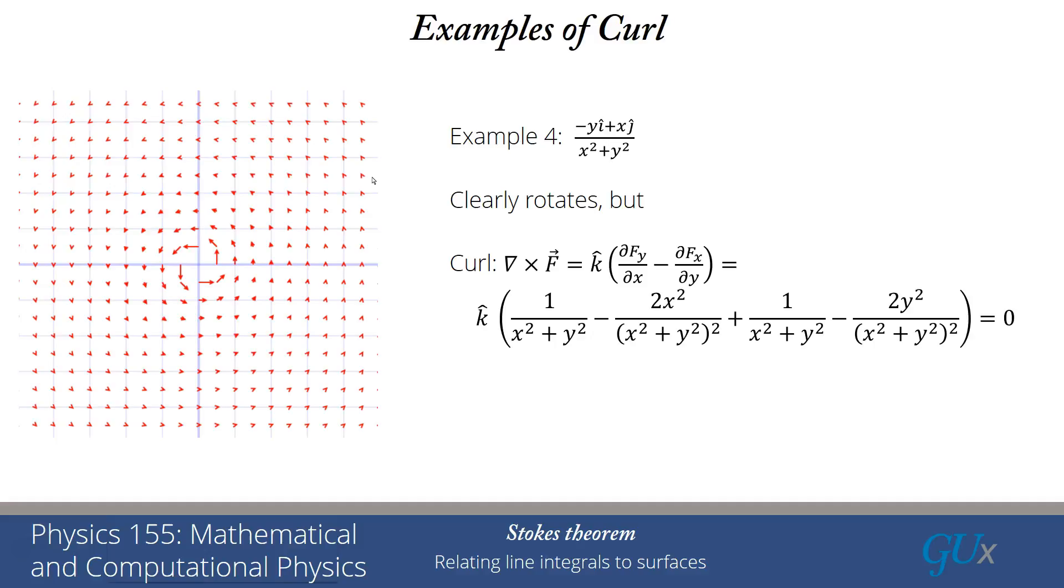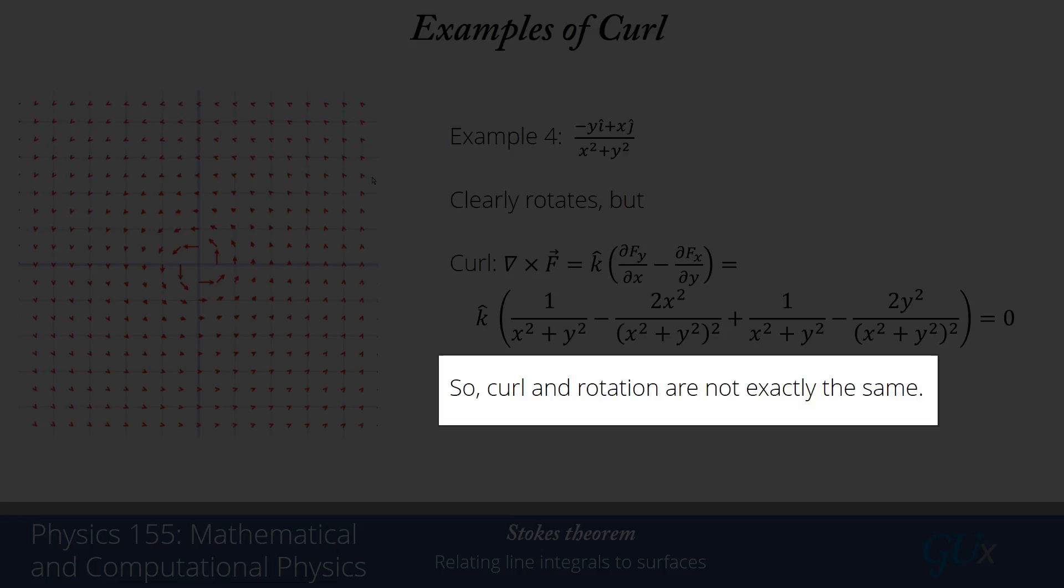And so even though it obviously looks like it rotates, it has 0 curl. So the net effect of trying to relate curl to rotation doesn't always work. It usually works. But you really have to be careful with that notion because there are clear circumstances where I have things that don't look at all like they rotate, but they have non-zero curl. And I have things that obviously look like they rotate, but they clearly have 0 curl.